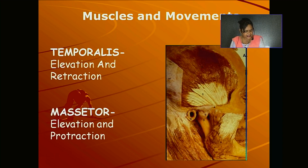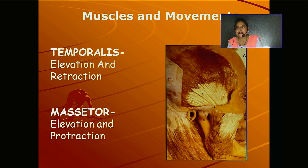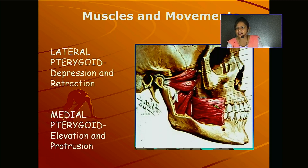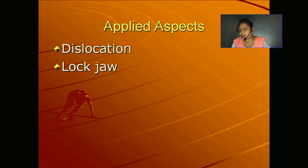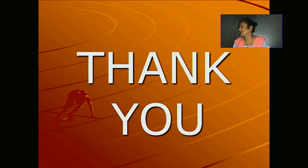The blood supply comes from branches of the superficial temporal and maxillary arteries. The nerve supply is provided by the auriculotemporal nerve and masseteric nerve. For applied importance: dislocation of the joint is very common during wide opening of the mouth, and lock jaw may occur during chewing movement or other mandibular movements due to paralysis of the muscles.